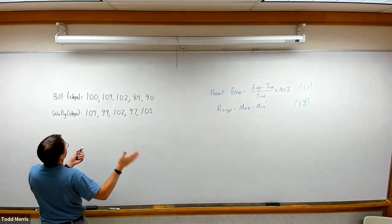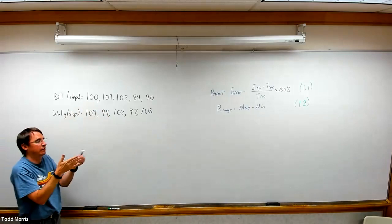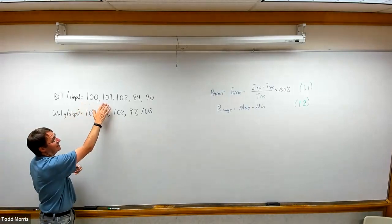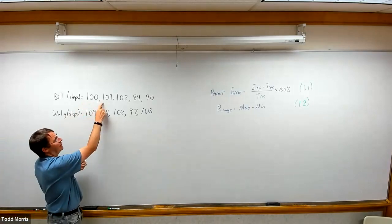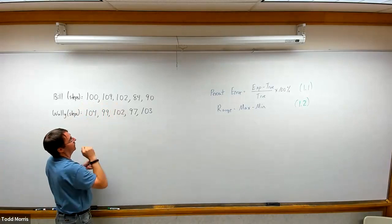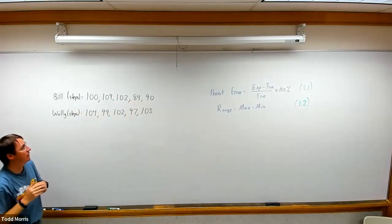Bill walks 100 steps, and the fitness tracker confirms that yes, Bill walked 100 steps. He then repeats the experiment. He walks an additional 100 steps, but his fitness tracker recorded he walked 109 steps. He did it again, walked 100 steps, but his fitness tracker recorded 102 steps, and likewise the fourth experiment and the fifth experiment.